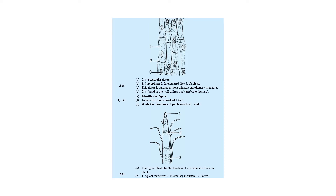The labeling for cardiac muscle: 1 — sarcoplasm, 2 — intercalated disc, 3 — nucleus. This cardiac muscle is involuntary in nature and is found in the wall of the heart of vertebrates.